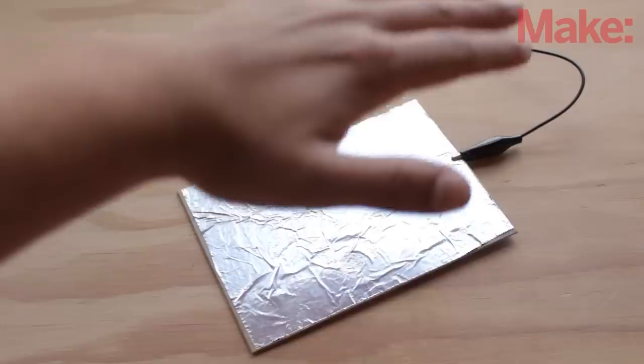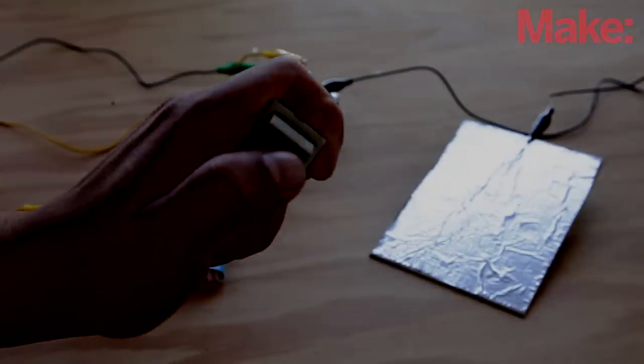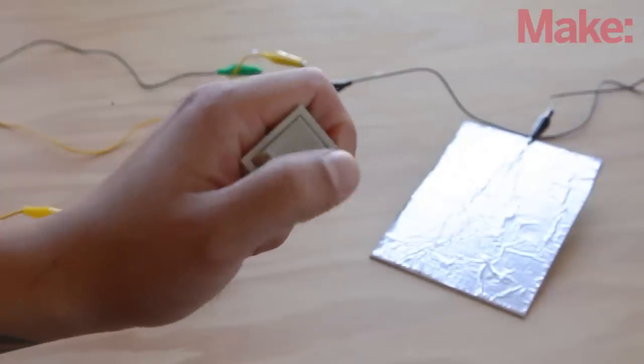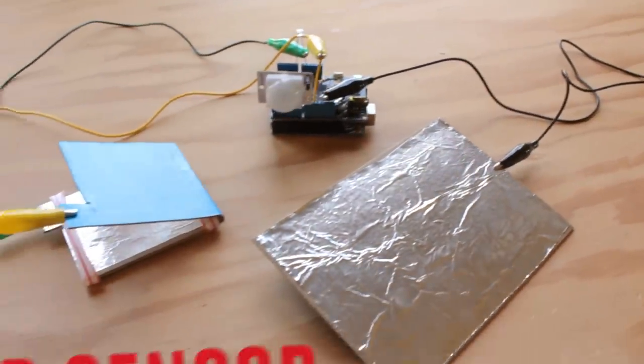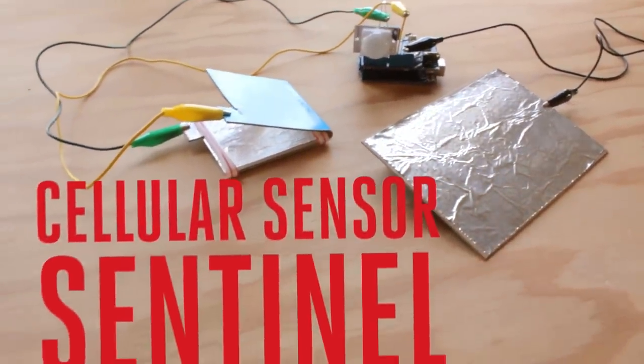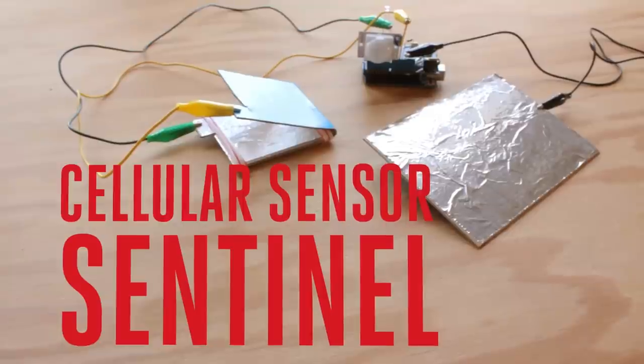It can detect movement, contact, proximity, and changes in ambient light, and it's easy to modify with other kinds of sensors for your own custom applications. It was designed and built by Adam Wolf of Wayne and Lane, and we call it the Cellular Sensor Sentinel.